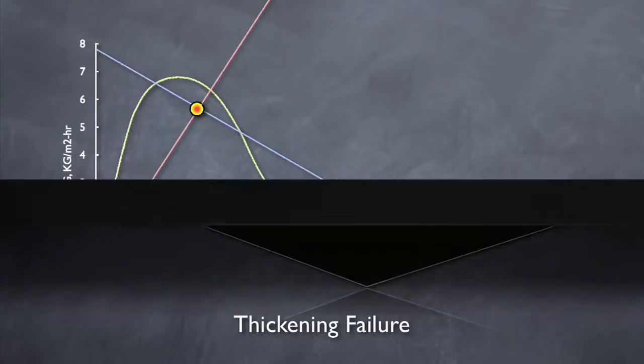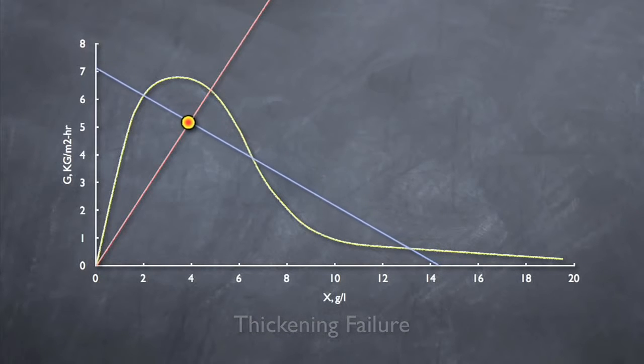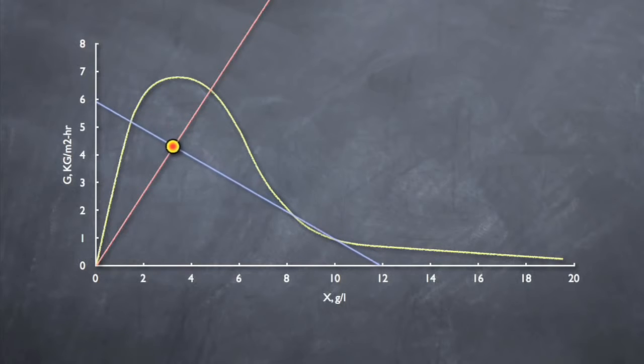So if either of these scenarios should occur, and you were to fail in thickening or clarification, there is some good news. The system will eventually fix itself. How? Well, if solids are passing over the weir, the concentration of the system will decrease. And as we've already covered, a lower mixed liquor concentration will move the underflow line back towards the origin and eventually under the settling curve.